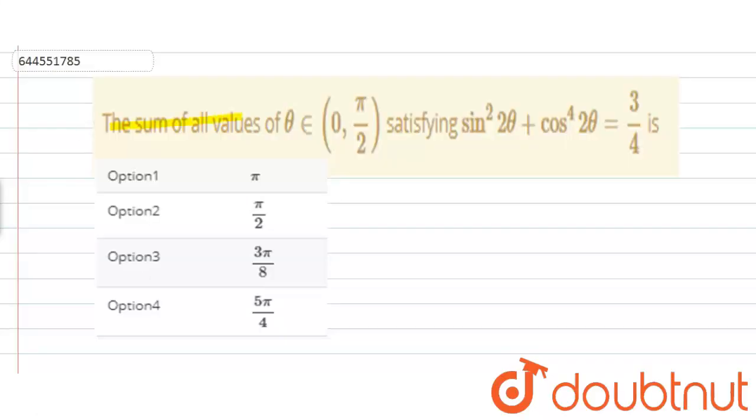The question is: the sum of all values of theta belonging to 0, pi by 2, satisfying sin square 2 theta plus cos to the power 4, 2 theta equals 3 by 4.